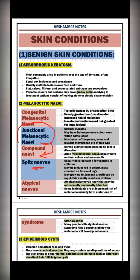Spitz nevus appears as a pink or red elevated nodule over the skin, common in the face, upper limb, and lower limb. It can reach up to one centimeter, and its management is excision or removal. Atypical nevus syndrome, also called dysplastic nevus syndrome, is an autosomal dominant condition characterized by mutation in the gene CDKN2A — that is the gene mutated in dysplastic nevus syndrome.